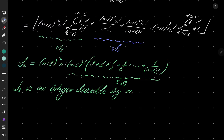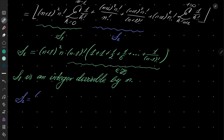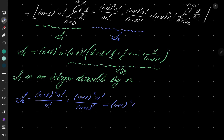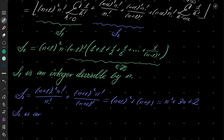The second part S2 combines the terms with 1/n! and 1/(n+1)!. We get (n+1)²·n!/n! + (n+1)²·n!/(n+1)! = (n+1)² + (n+1), which simplifies to n² + 3n + 2. So S2 is an integer, and moreover S2 is clearly congruent to 2 modulo n.